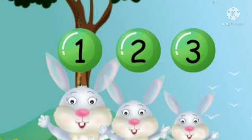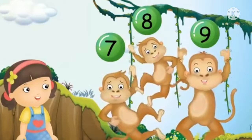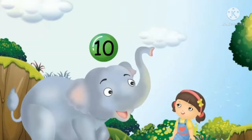Rabbits, rabbits — one, two, three — will you come and play with me? Camels, camels — four, five, six — why do you have a hump like this? Monkeys, monkeys — seven, eight, nine — will you teach me how to climb? When I count it up to ten, the elephant says, let's start again.